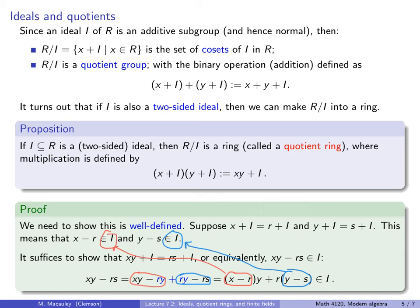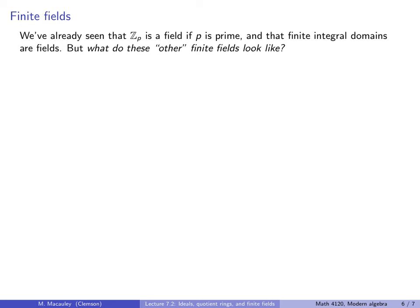That establishes the proposition that any time we have a two-sided ideal, R mod I can be made into a ring because this definition of multiplication of cosets is well defined. The last topic of this lecture is finite fields. We've already seen that Z_p is a field if p is prime, and in the previous lecture that finite integral domains are fields.